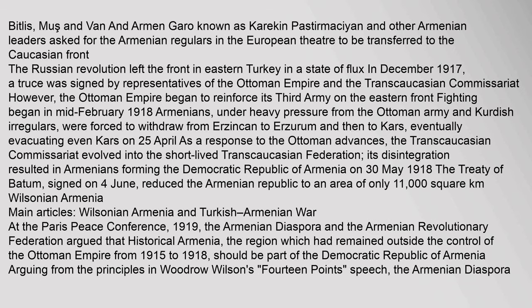Armenian leaders asked for the Armenian regulars in the European theater to be transferred to the Caucasian front. The Russian Revolution left the front in eastern Turkey in a state of flux. In December 1917, a truce was signed by representatives of the Ottoman Empire and the Transcaucasian Commissariat. However, the Ottoman Empire began to reinforce its third army on the eastern front; fighting began in mid-February 1918. Armenians, under heavy pressure from the Ottoman army and Kurdish irregulars, were forced to withdraw from Erzinkan to Erzurum and then to Kars, eventually evacuating even Kars on 25 April. As a response to the Ottoman advances, the Transcaucasian Commissariat evolved into the short-lived Transcaucasian Federation. Its disintegration resulted in Armenians forming the Democratic Republic of Armenia on 30 May 1918. The Treaty of Bitum, signed on 4 June, reduced the Armenian Republic to an area of only 11,000 square km.